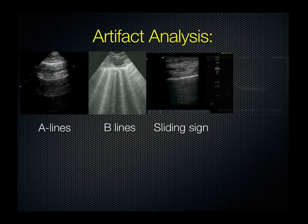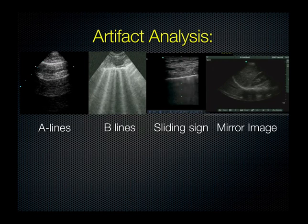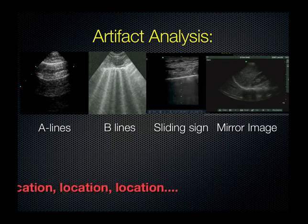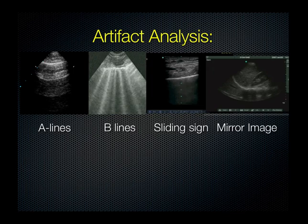Going back to our artifact analysis: we have A lines and B lines, the sliding sign, and mirror images. When we follow these throughout the lung examination, we can extrapolate what may be going on underneath. What's really important to note is where these artifacts are located, because it will tell you a lot about the underlying pathology.